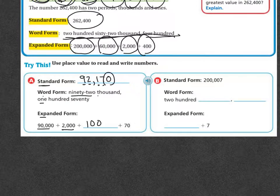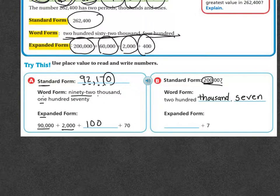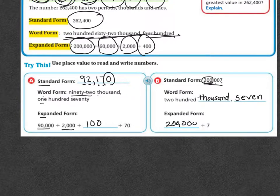This next one gives us the word form: two hundred thousand and seven ones, so we write 200,007. In expanded form, I've got two hundred thousand. There's nothing in the ten thousands, nothing in the thousands, nothing in the hundreds, nothing in the tens — there's just plus seven.